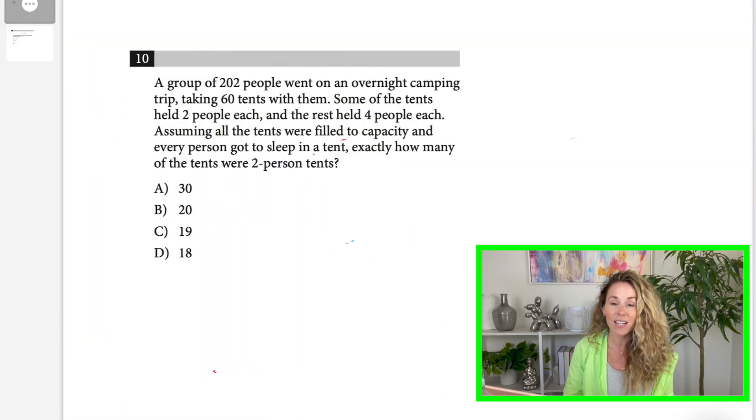Let me show you how it works. The type of problem that you can use working backwards on is typically a word problem with integers as the answer choices. So as you can see in this number 10, I have a word problem. I have integer answer choices.